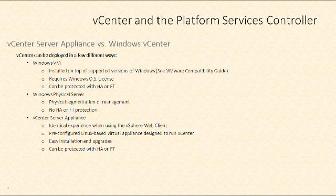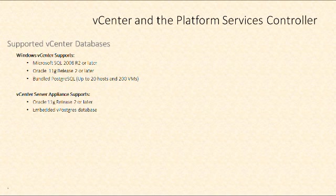Adoption of the vCenter server appliance has been a little slow in the past because it doesn't support SQL databases, and the integrated database didn't used to scale very large. That's changed in vCenter 6. The Windows version still supports SQL, Oracle, and a bundled database supporting up to 20 hosts and 200 virtual machines. The appliance still doesn't support SQL — only Oracle and the embedded vPostgres database — but that embedded database can now support up to 1,000 hosts and 10,000 virtual machines, making it significantly more scalable.